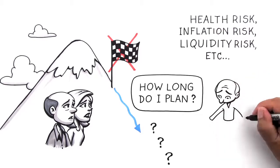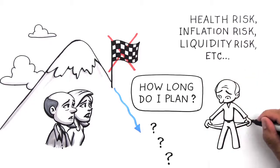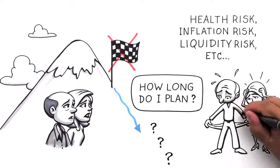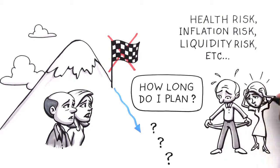In the end, unless our retirement plan effectively addresses each of these risks, we are likely to crash during our descent and be unable to safely complete our journey back down the mountain. In other words, we are more likely to run out of money.